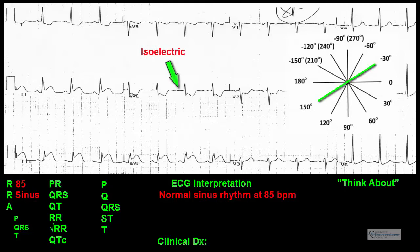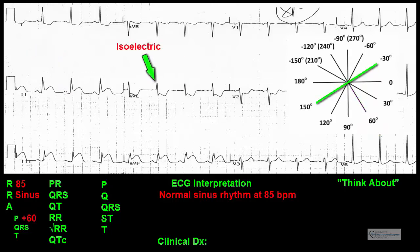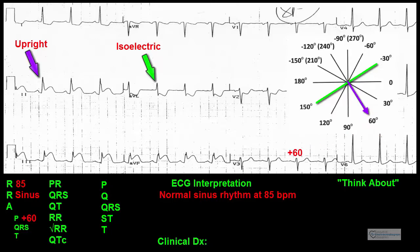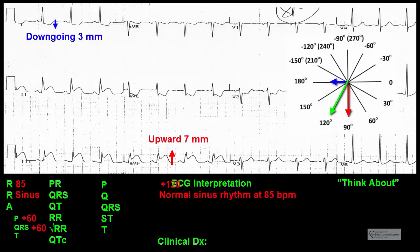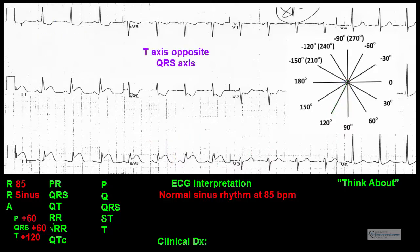Axes: The P waves are isoelectric in lead AVL and upright in lead 2, so the P wave axis is positive 60 degrees, which is normal. The QRS complexes are also isoelectric in lead AVL and upright in lead 2, giving a QRS axis of positive 60 degrees, which is also normal. The T waves are down-going approximately 3 millimeters in lead 1 and upward approximately 7 millimeters in lead AVF, suggesting the T wave axis is around positive 120 degrees. This is somewhat opposite to the QRS axis and will be put into the think-about section.